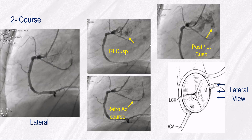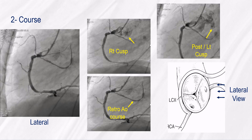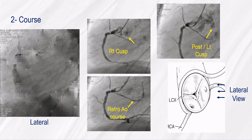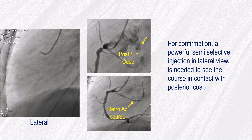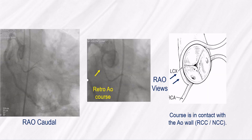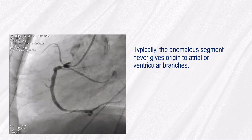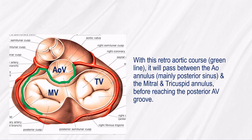Regarding the course, a normal CX follows a retro-aortic course passing behind the right, then the posterior aortic cusp. For confirmation, a powerful semi-selective injection in the left RAO view is needed to see the course in contact with the posterior cusp. Also, the RCA caudal view is useful. Typically, the anomalous segment never gives origin to atrial or ventricular branches. With this retro-aortic course, it will pass between the aortic annulus — mainly the posterior sinus — and the mitral and tricuspid annulus before reaching the posterior AV groove.